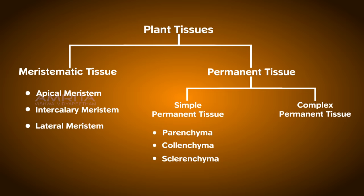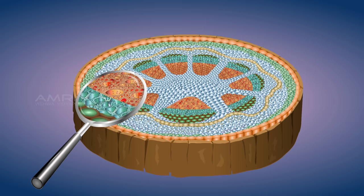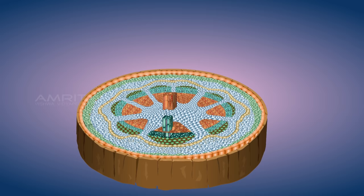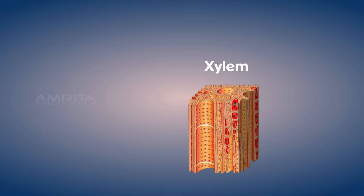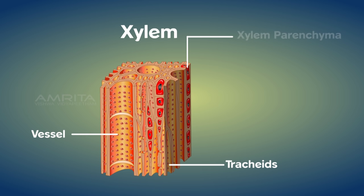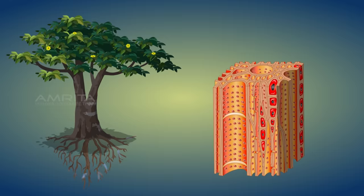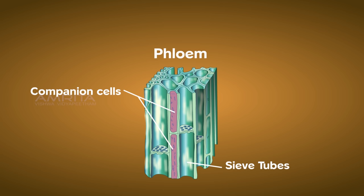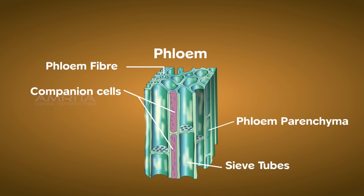We will now move on to the second type of permanent tissue: the complex permanent tissues. As the name indicates, complex permanent tissues consist of more than one type of cell. They are classified into xylem and phloem. Xylem is a complex tissue consisting of tracheids, vessels, xylem parenchyma and xylem fibres. It transports water and minerals as raw materials from the roots to the other plant parts. Phloem consists of sieve tubes, companion cells, phloem fibre and phloem parenchyma, which transports prepared food from leaves to the other parts of the plant.